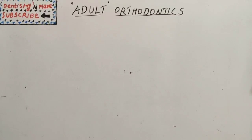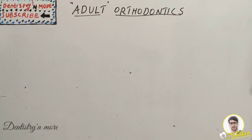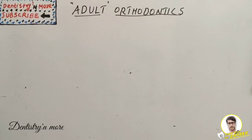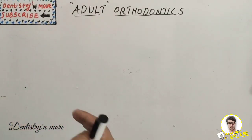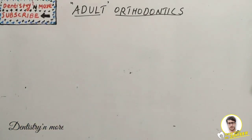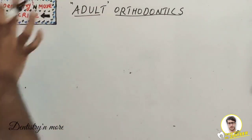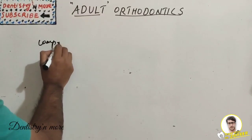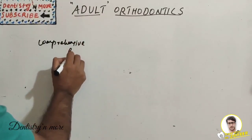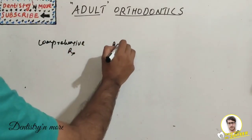Welcome back to another session in dentistry. Today's topic is adult orthodontics. Orthodontic treatment is commonly given for younger people or adolescents, up to around age 20, because bone growth cessation happens by then. Adult orthodontics is for those 25 and above — there is no strict age restriction. Adult patients demand orthodontics for two things: comprehensive treatment or adjunctive treatment.